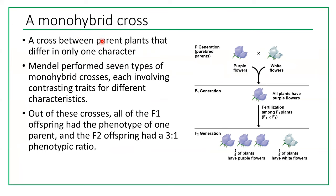A monohybrid cross is a cross between parent plants that differ in only one character. For example, two plants that are identical except for one gene — flower color. The only difference is that one has the dominant purple allele and the other has the recessive white allele. Mendel performed several monohybrid crosses with contrasting traits. All F1 offspring showed the phenotype of one parent, and the F2 offspring showed a three-to-one phenotypic ratio.